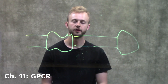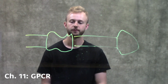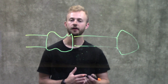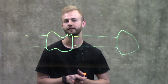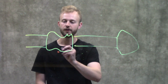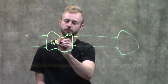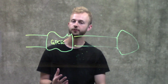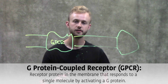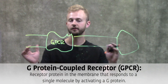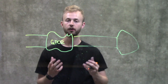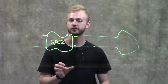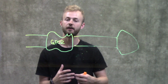This video is going to be about G-protein-coupled receptors, or GPCRs, which are very important signaling pathways to have an understanding of. The G-protein-coupled receptor is a transmembrane protein, so these signaling molecules are found in our plasma membranes. It has seven transmembrane alpha helices.